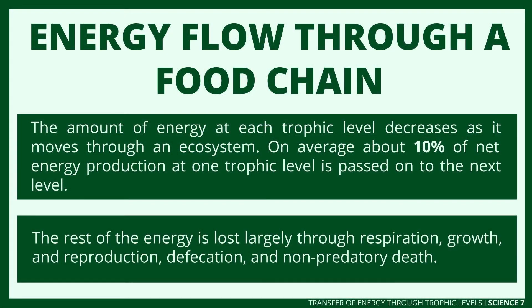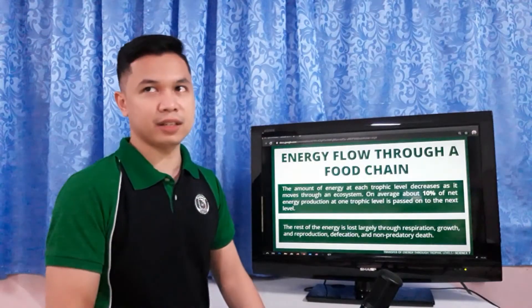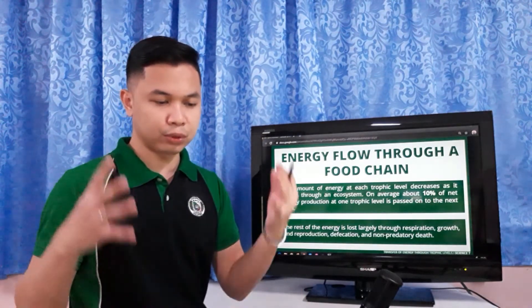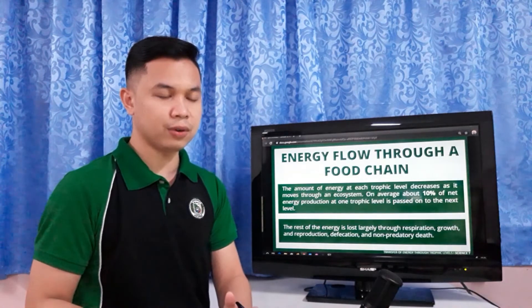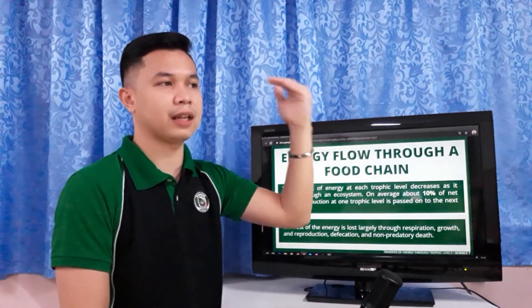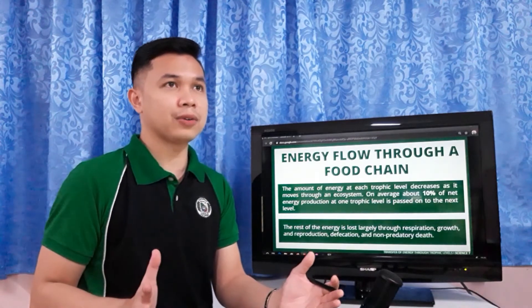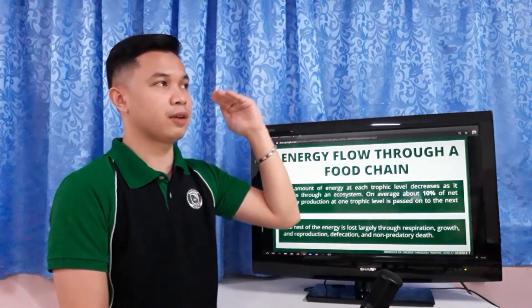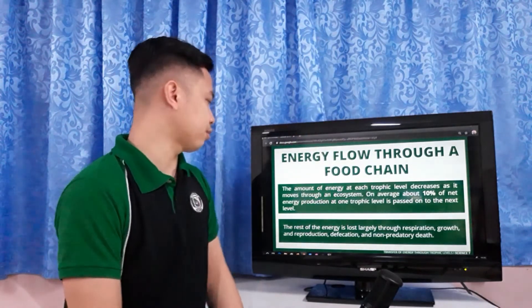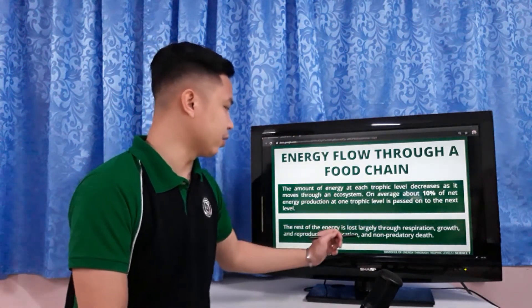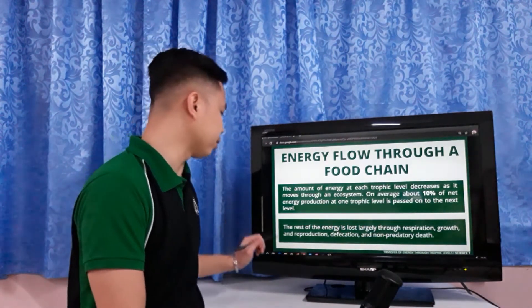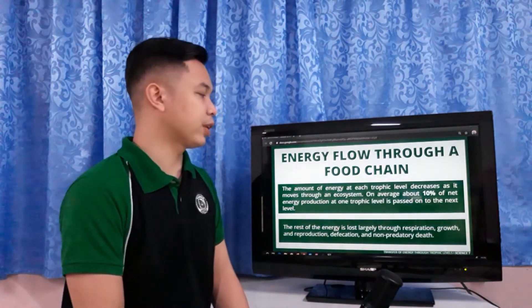Energy flows through a food chain, and the amount of energy at each trophic level decreases as it moves through an ecosystem. On average, about 10% of net energy production at one trophic level is passed on to the next. The rest of the energy is lost largely through respiration, growth and reproduction, defecation, and non-predatory death.